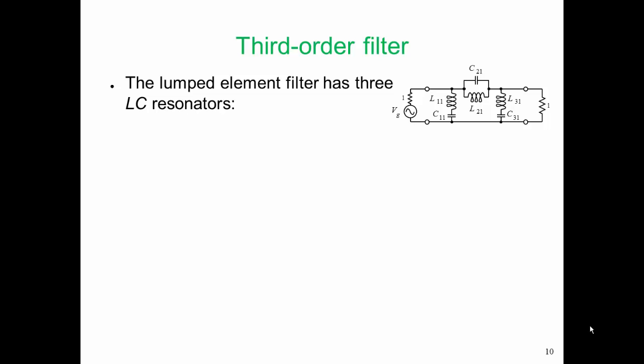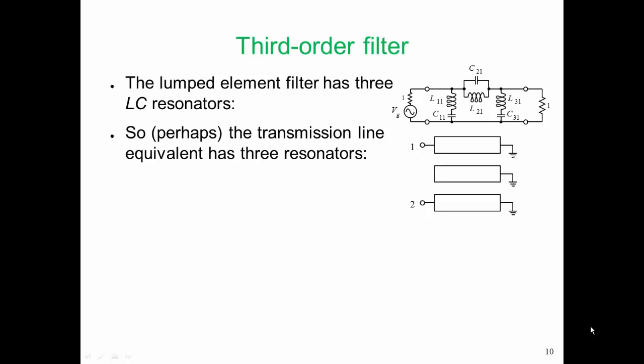Here is our lumped element third order filter. Perhaps the transmission line equivalent has three resonators. Our lumped element circuit has three resonators. Here's a central parallel LC resonator, here is a series LC resonator, and here is our third resonator, also a series LC circuit. So perhaps this is the thinking that people would have had in the early days. Perhaps this can be realized using three transmission lines, each of the transmission lines being lambda on four long at the center frequency of the filter, so that each of those transmission lines looks like a resonator.